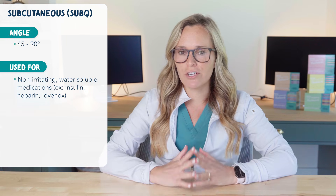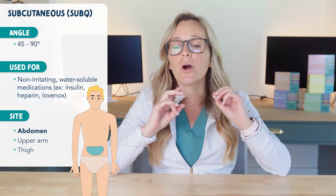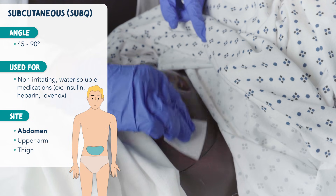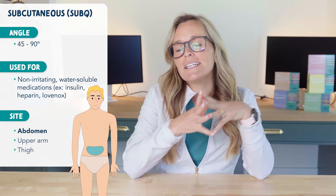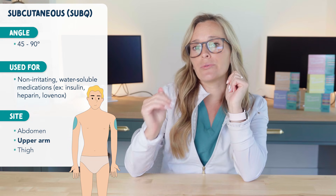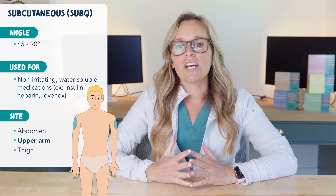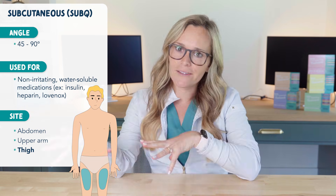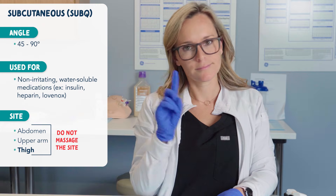Typical sites for subcutaneous administration are the abdomen — you want to be sure you are two inches away from the umbilicus when injecting there, and subcutaneous is actually best absorbed in the abdomen. You can also inject it into the upper arm, three inches below the shoulder and three inches above the elbow on the side or back of arm. The last site for subq is the upper outer thigh. For all subq injections, you do not want to massage the site after injecting.